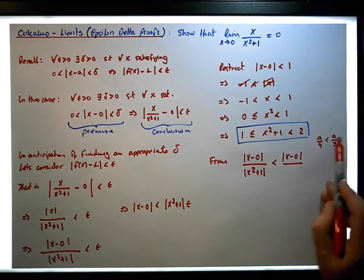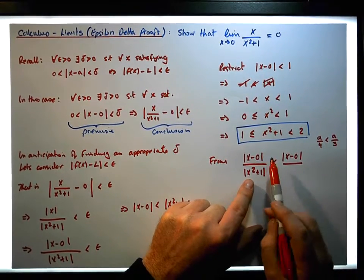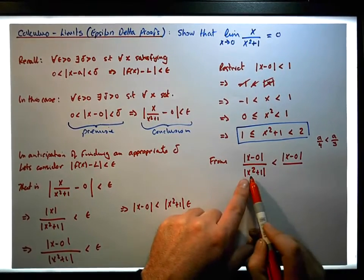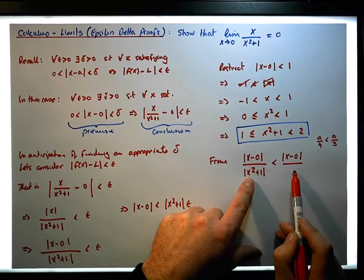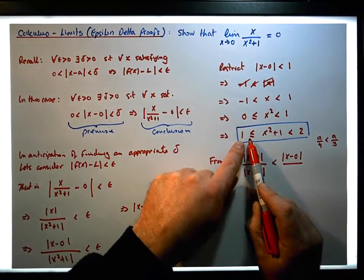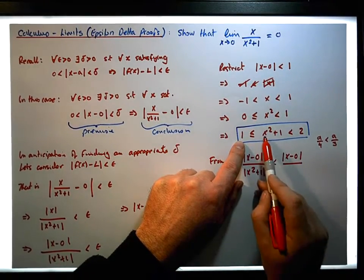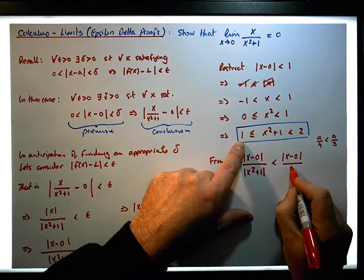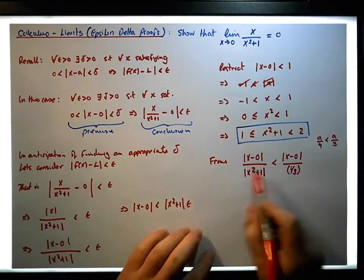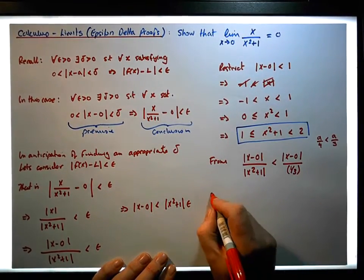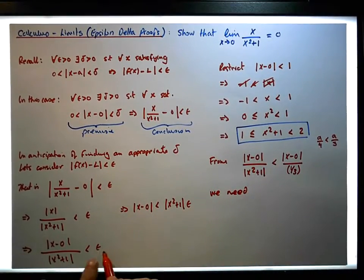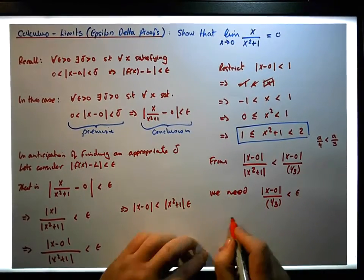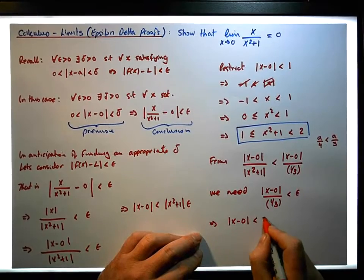So to ensure this ratio is less than that expression, I need to divide by a number smaller than x squared plus one. I know x squared plus one is bigger than or equal to one, so if I divide by any number smaller than that — say one third for convenience — this inequality will still hold. So we need the absolute value of x minus zero all over one third to be less than epsilon, which implies that x minus zero needs to be less than three times epsilon.